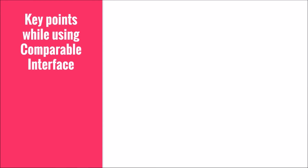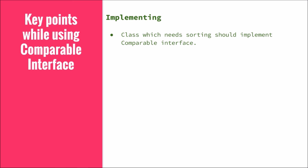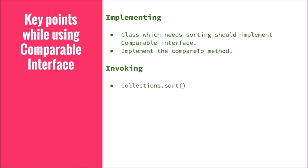Let's summarize the key points when using the Comparable interface. First, add 'implements Comparable' to the class you want to make sortable. Second, implement or override the compareTo method where you write the sorting logic. Third, to invoke sorting: if it is a collection use Collections.sort, and if it is an array use Arrays.sort.